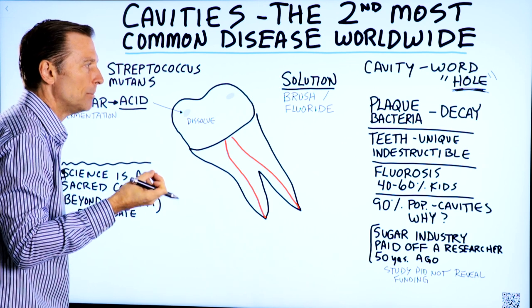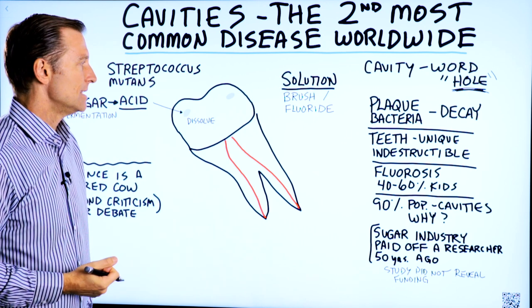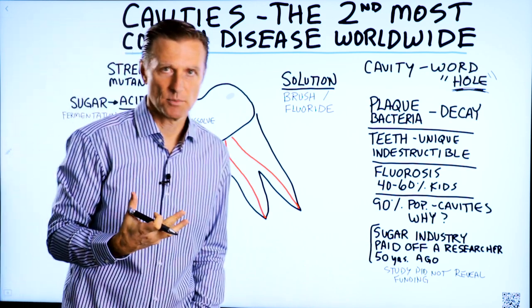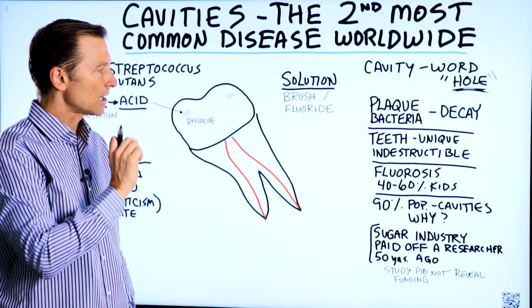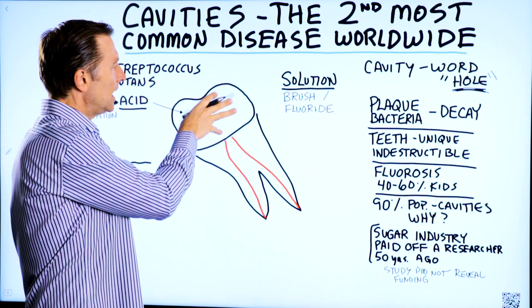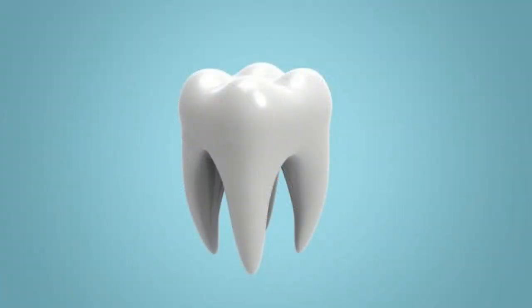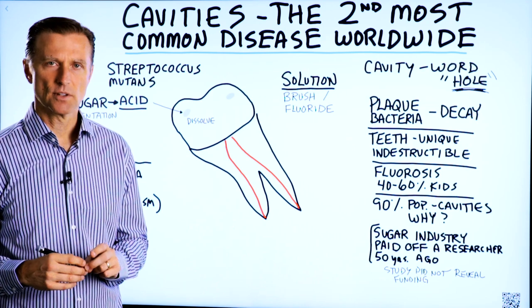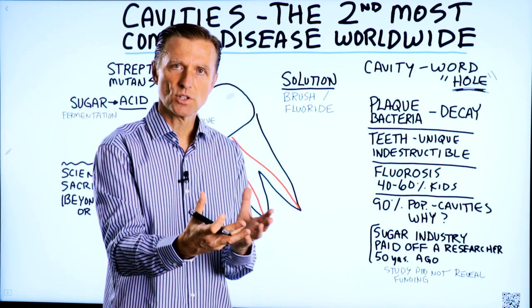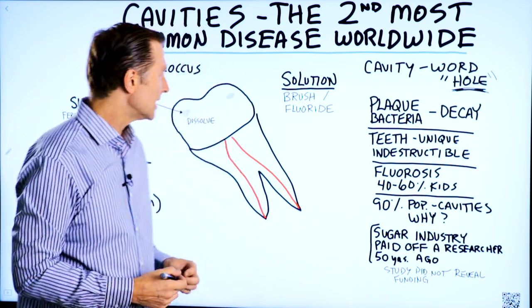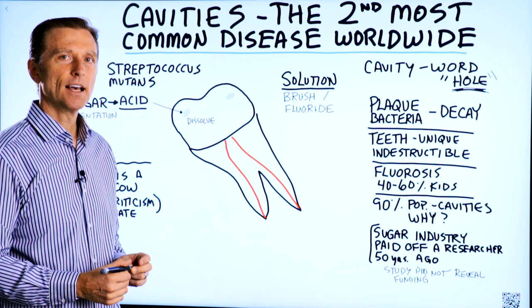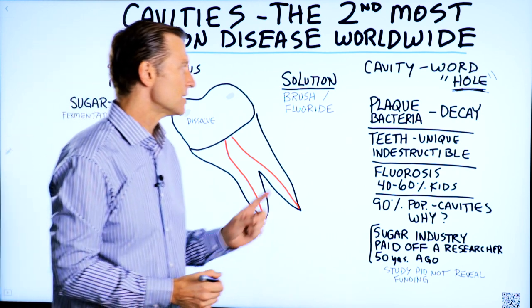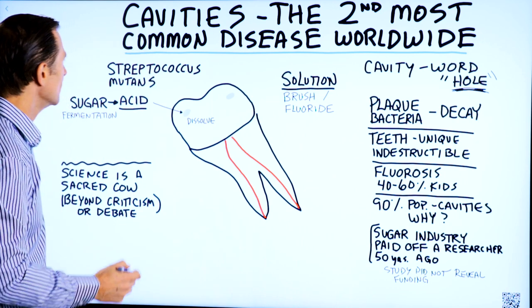What's unique about teeth is that they're supposed to be indestructible, and you don't have cells that are constantly being replaced on the enamel — the outside of the tooth. We know this from looking at fossils; certain skulls still have teeth intact, they're very indestructible. But there is one thing that will destroy them, and that is a certain type of bacteria.